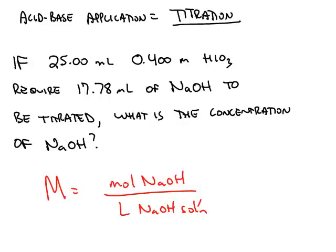A common application in the lab of acid-base chemistry is titrations. Here's a typical problem: 25 milliliters of 0.4 molar iotic acid, HIO3, are titrated with 17.78 milliliters of sodium hydroxide.